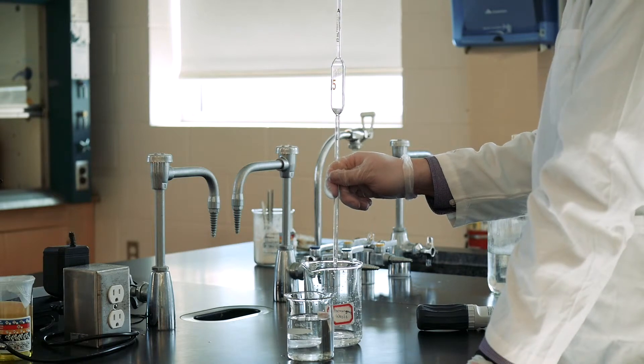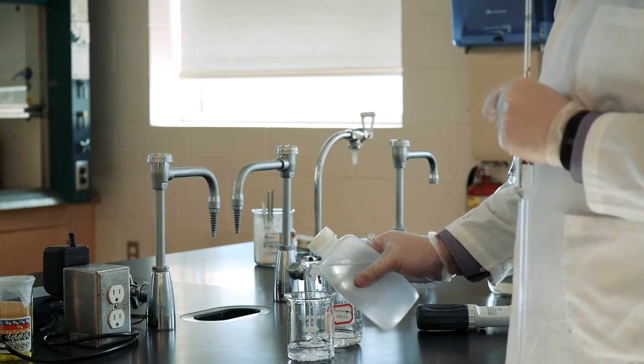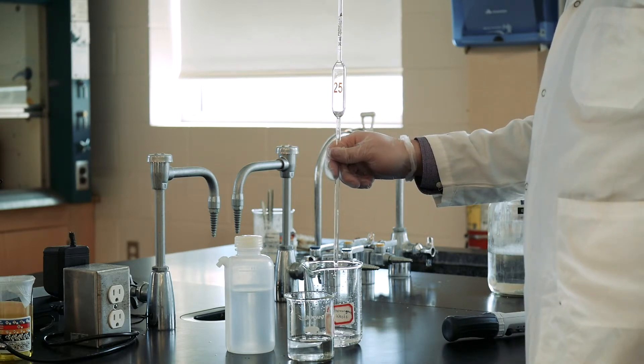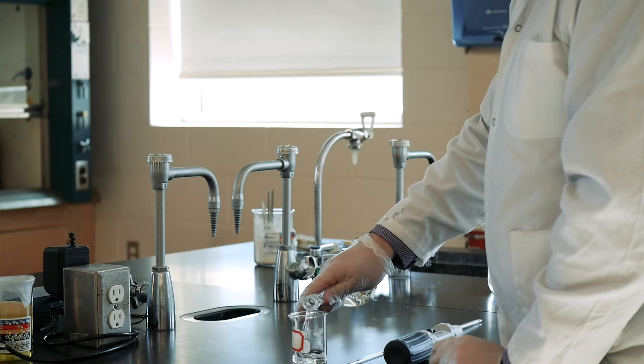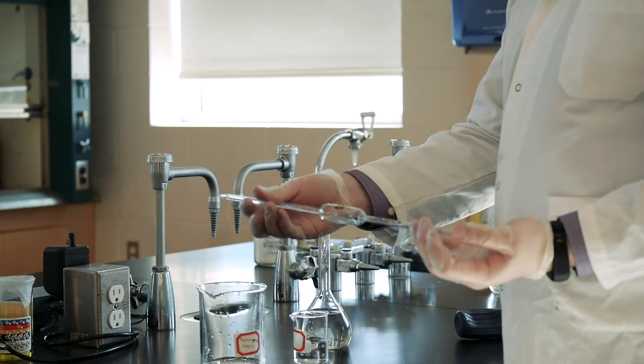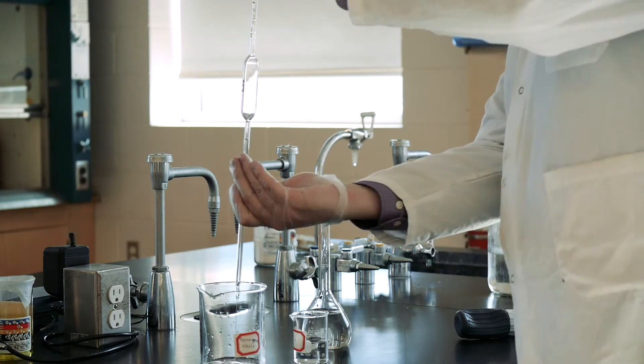To rinse the pipette before drawing up your solution, rinse 2 times with deionized water and then rinse 2 times with the sample to be pipetted. Each time, draw in about 1 fifth of the pipette's volume, rotate the pipette horizontally a few times to coat the inner surface, and then discard the liquid.